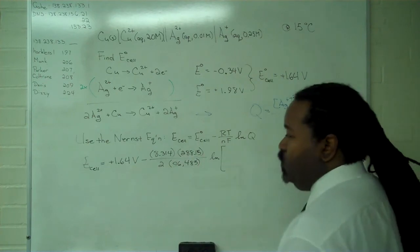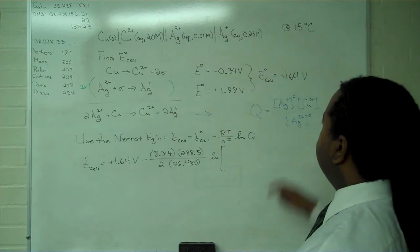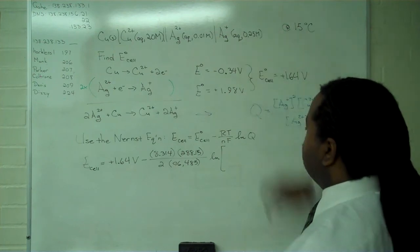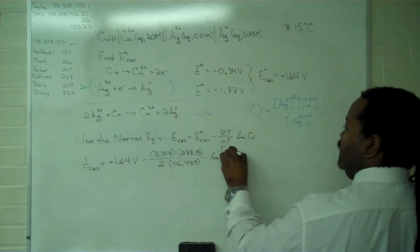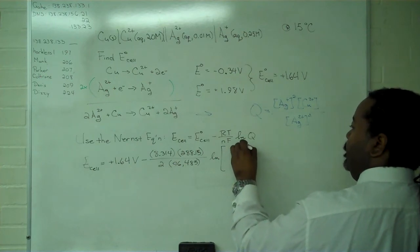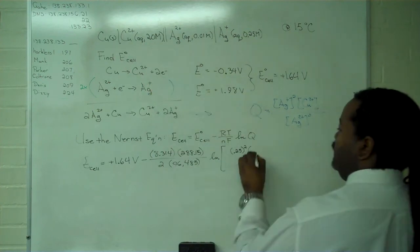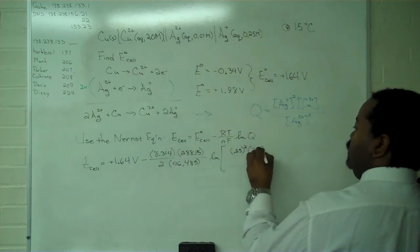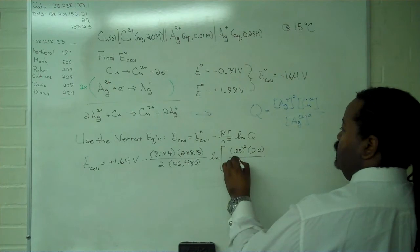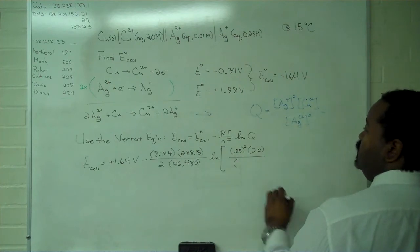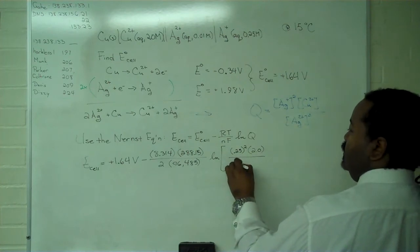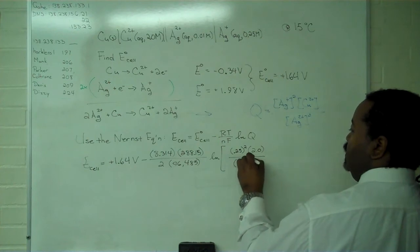And now for the reaction quotient Q. We know the concentration of silver plus is 0.25 molar, that's squared. We have the concentration of copper 2 plus, that's 2.0 molar. Concentration of silver 2 plus is 0.01, and that's squared.